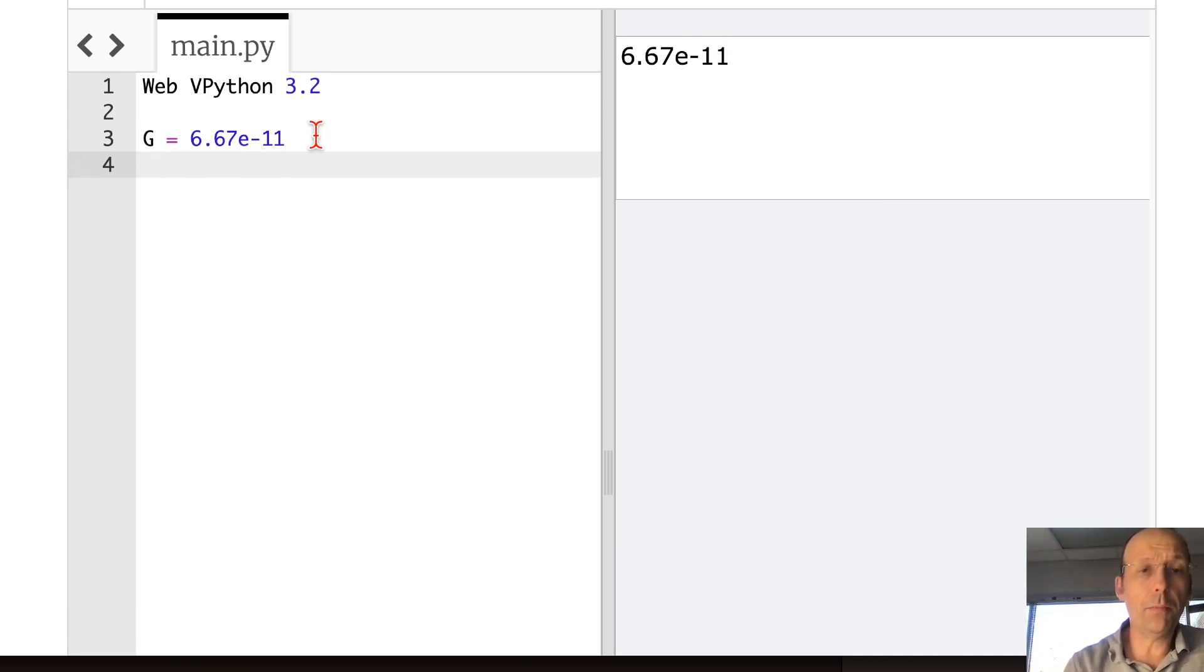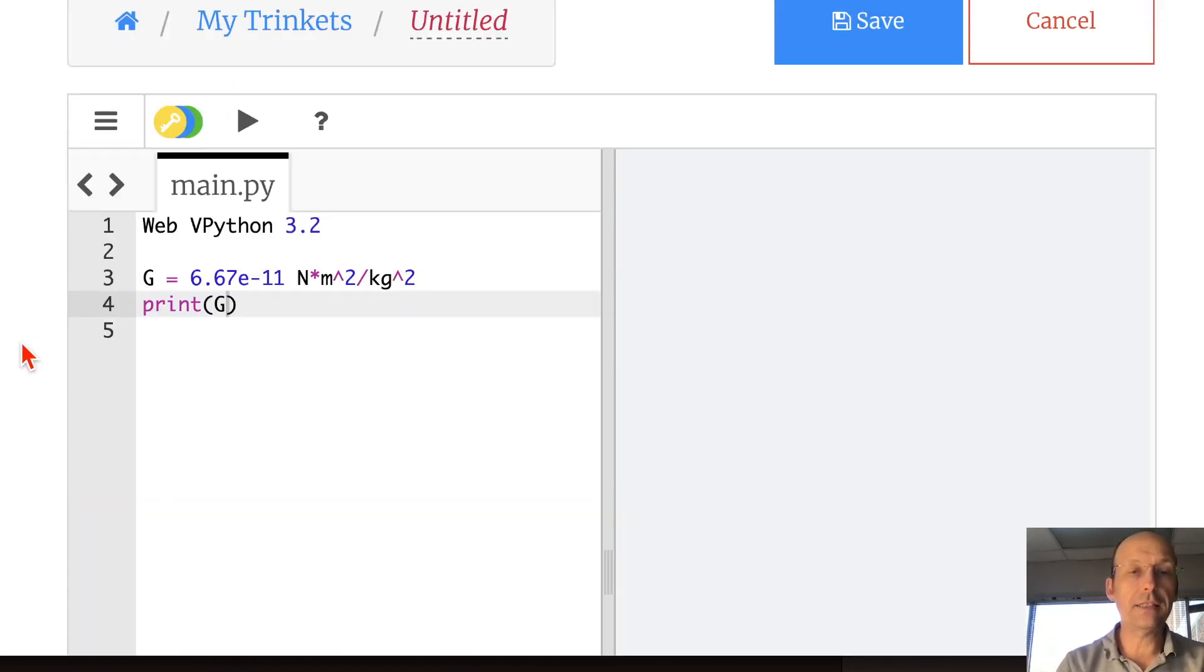We don't want to put units in the calculation because then if I did that, let's say the units would be Newton meters squared per kilogram squared, and then I print g. See, so Python gives me an error because it's like, I don't know what all these things are. I don't know the variable n. I don't know the variable m. I don't know hat. I don't know any of those things. So it doesn't know those. If you want to include them there, I can put a number sign and it becomes a comment. And then Python ignores that.